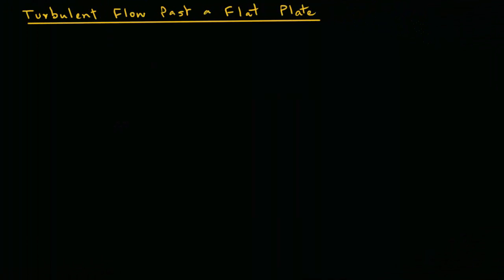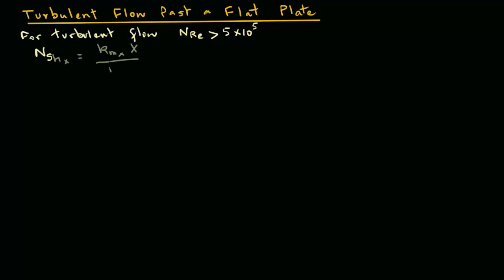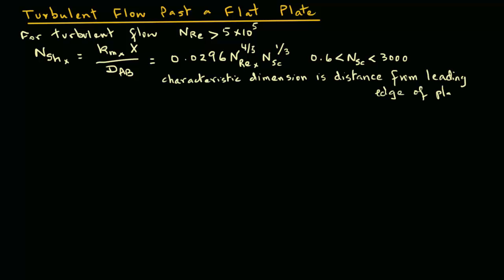If we have turbulent flow past a flat plate, the Reynolds number is greater than 5×10^5. The Sherwood number at a given location X is: N_SH,x = K_Mx times X divided by D_AB equals 0.0296 times Reynolds number N_RE,x raised to power 4/5, times Schmidt number N_SC raised to power 1/3. This is valid for Schmidt number greater than 0.6 but less than 3000. The characteristic dimension is the distance from the leading edge of the plate, and K_Mx is the local coefficient.